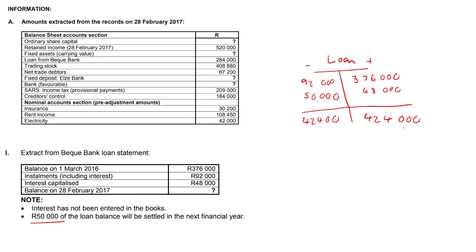Therefore your balancing figure — I'm going to put that in green — it's just going to be 282,000. Now this 282,000, we're just going to plug that straight into our loan total in our balance sheet. That is it.